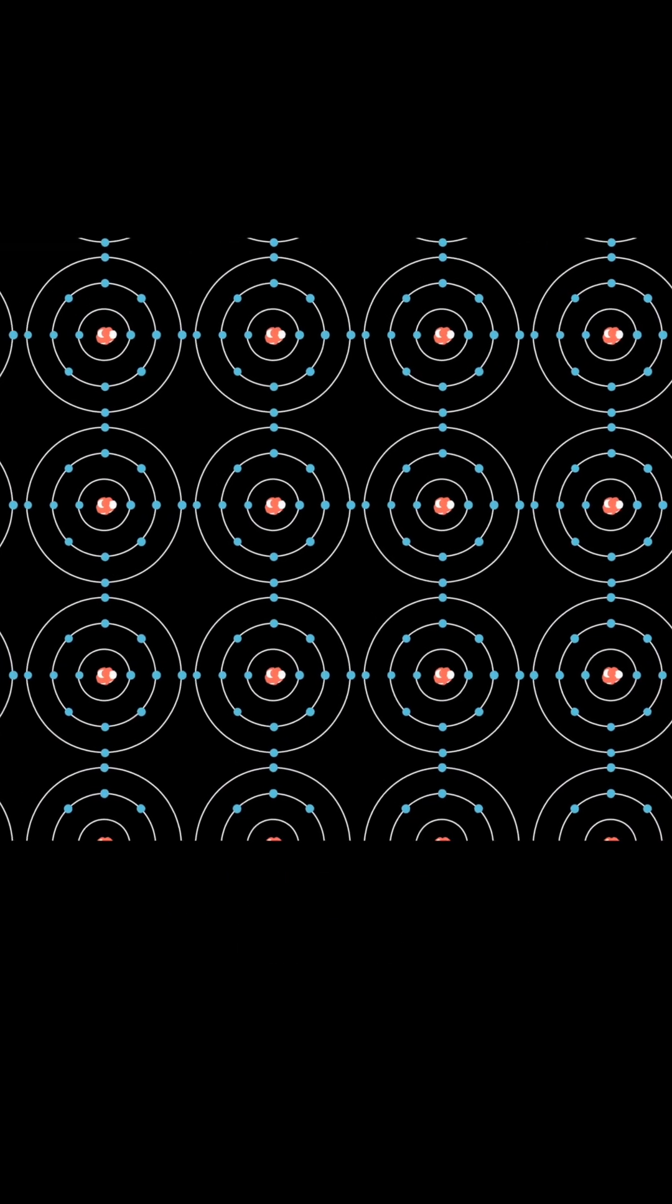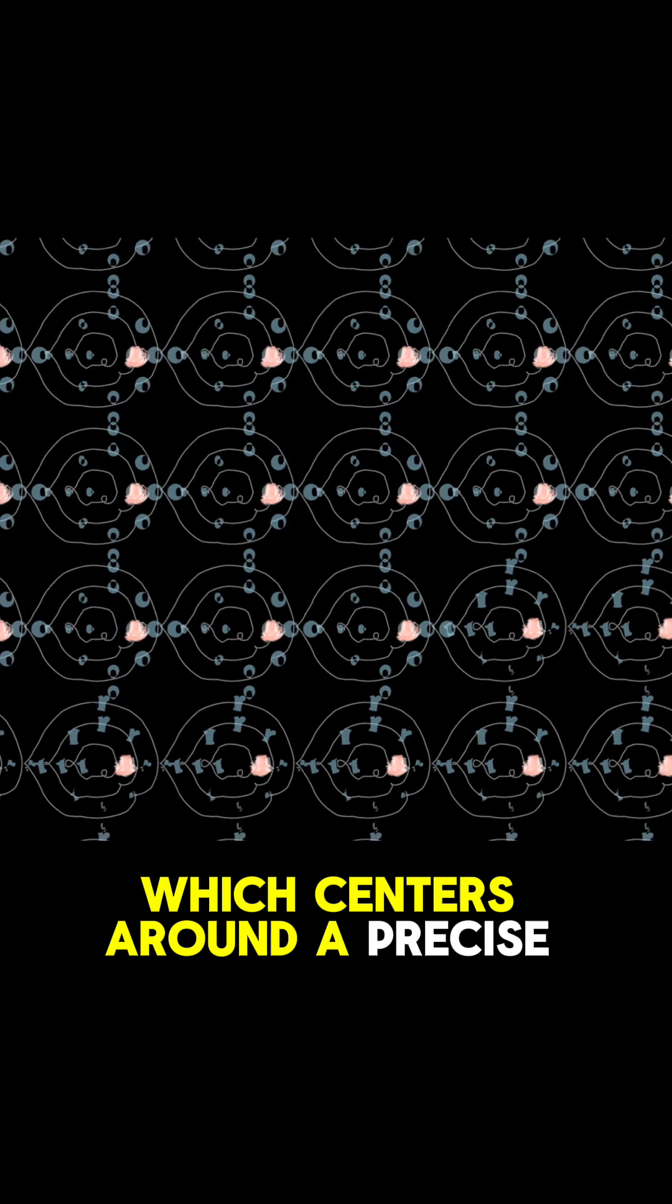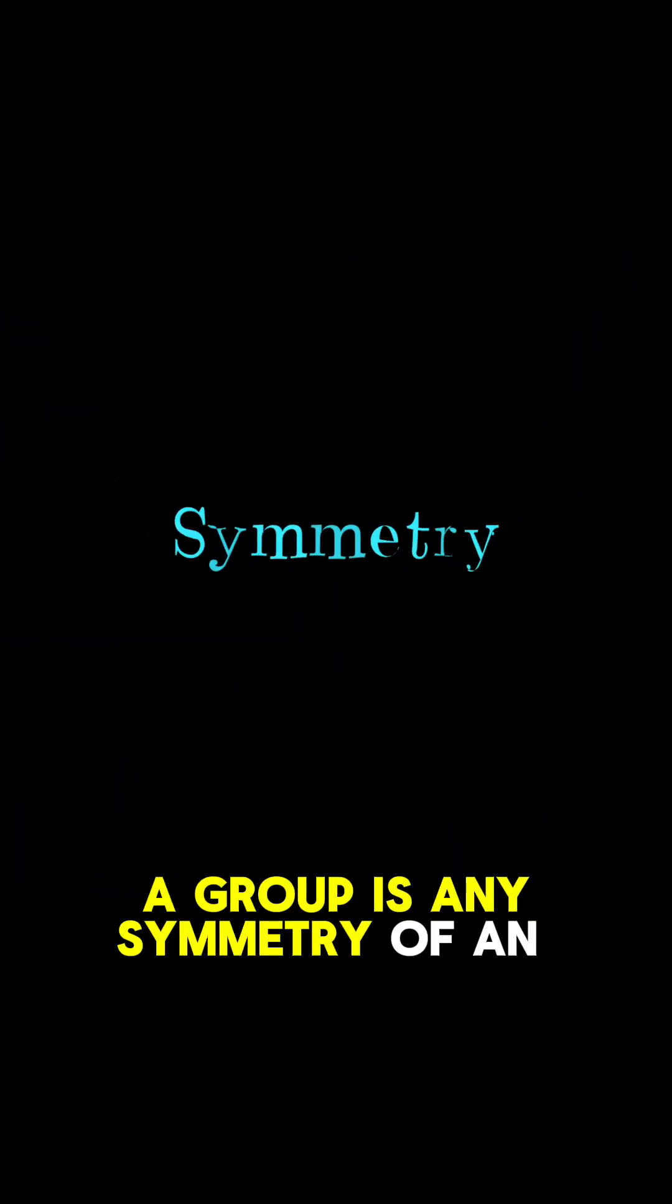As the name suggests, group theory is a subject which centers around a precise mathematical object known as a group. Intuitively, a group is any symmetry of an object.